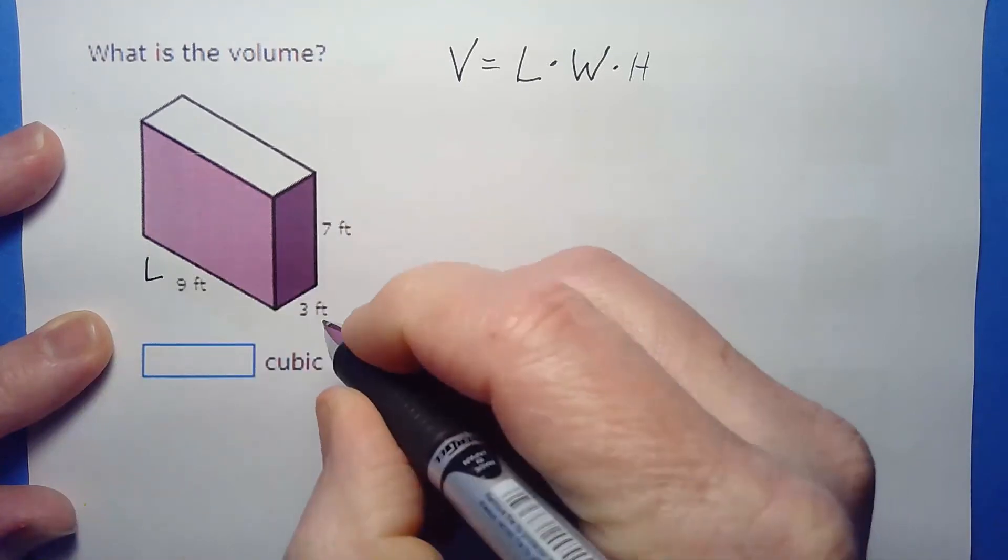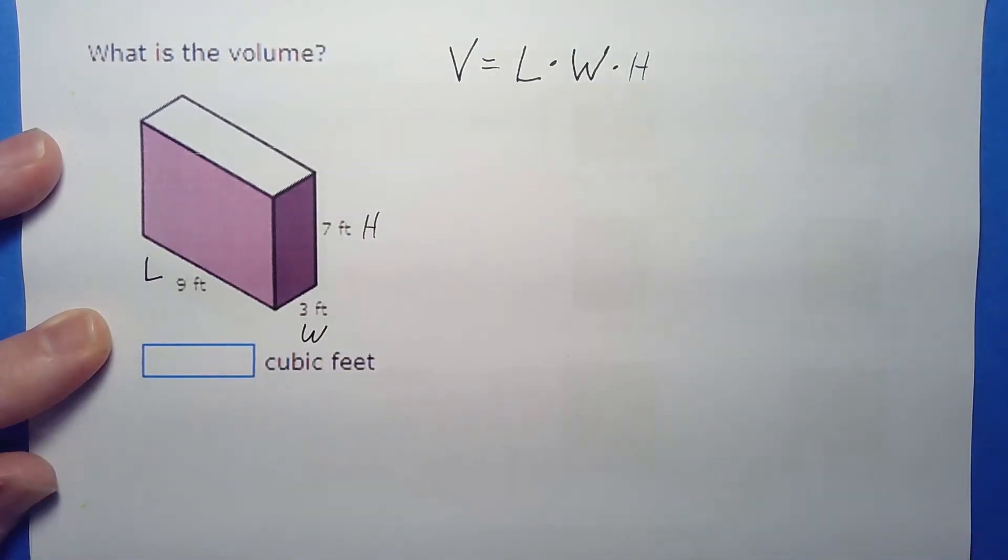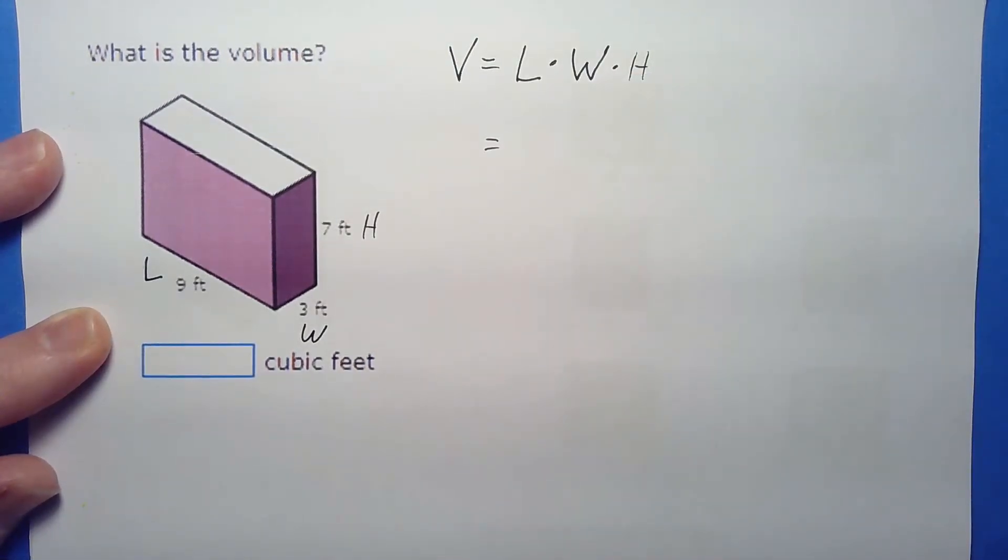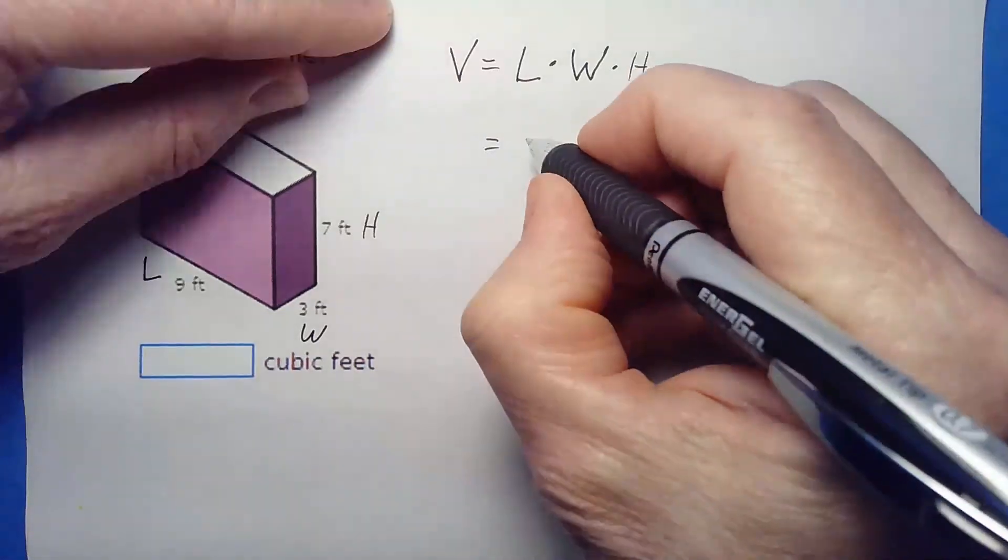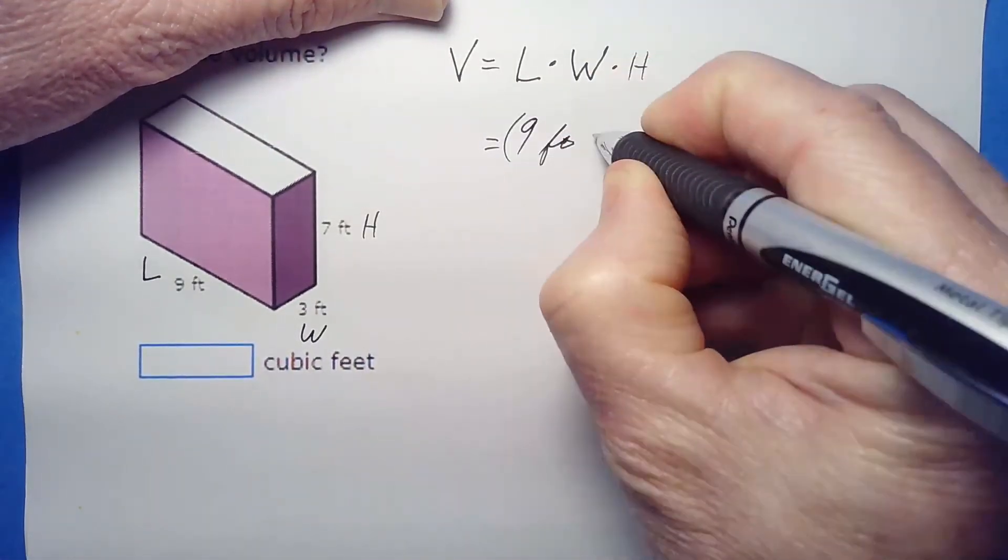Now it really doesn't matter what you call the length, the width, and the height, so it's completely arbitrary. But just to make it simple, I usually just kind of do it in order. I call this the length, I call this the width, and I call this the height. It doesn't matter what you call which, but just pick one or the other. So our length here is 9 feet, our...